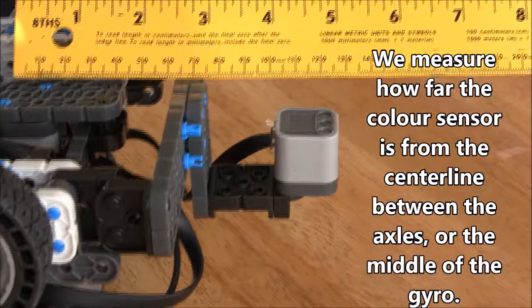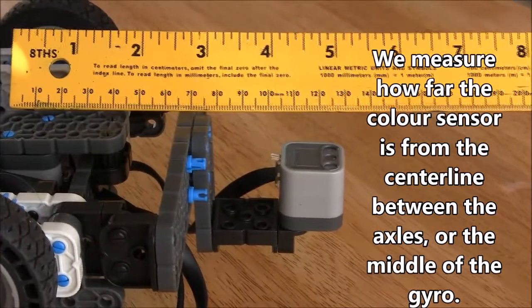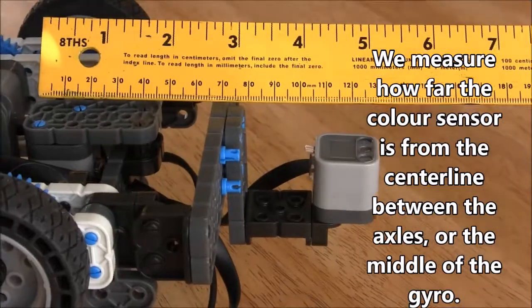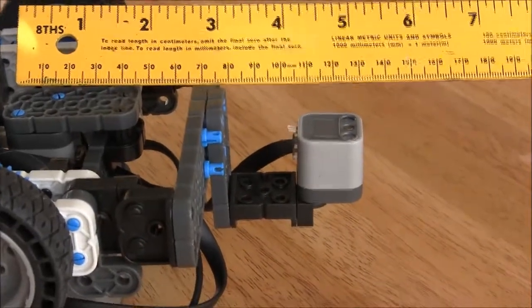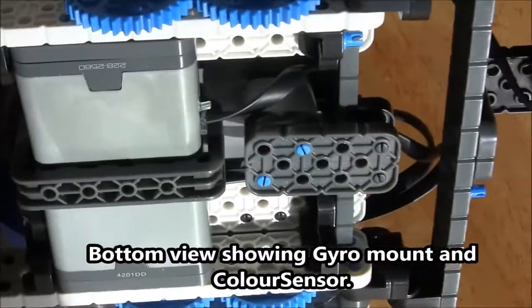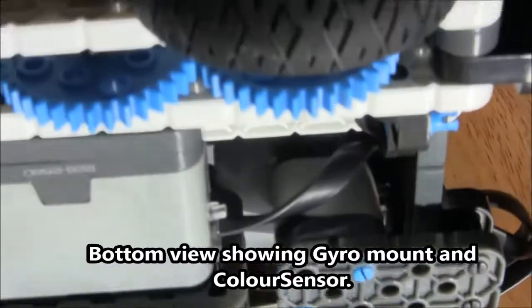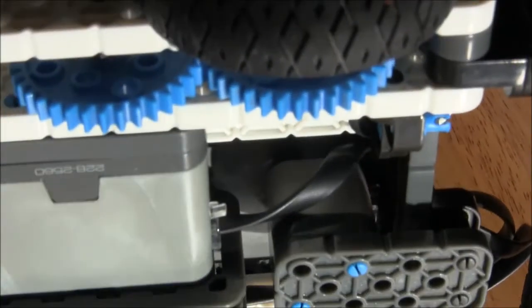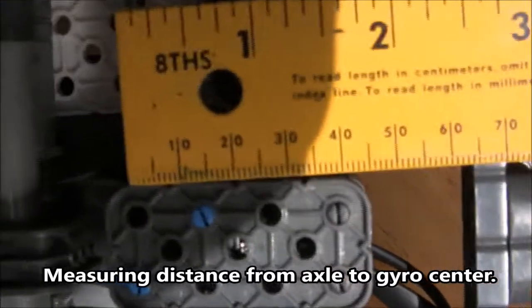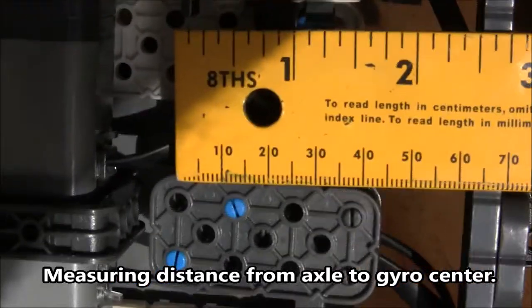The color sensor is mounted quite a ways forward of the axis or center line between the two axles. So when the tape runs out, the robot stops. Then it has to go forward a little offset amount so that when it turns, the color sensor will be centered over the tape, whether it's on the left side or the right side of where the tape broke. We have to move the robot forward to align the wheels so that they turn properly.